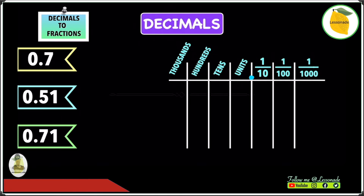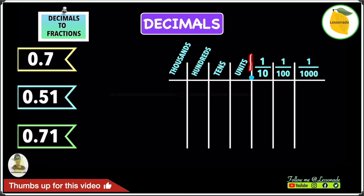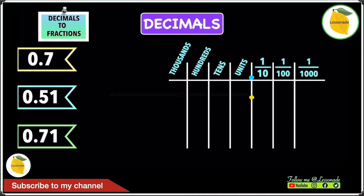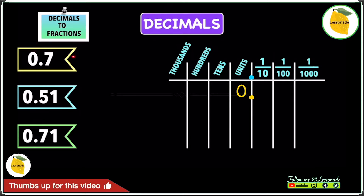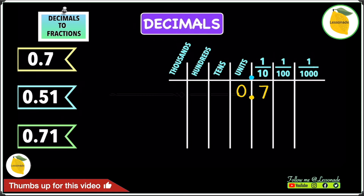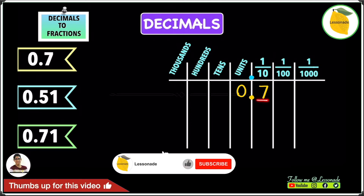Let's start by writing 0.7 in the place value table. Firstly, we have to match the decimal point correctly in line with the decimal point in the place value table, such as this one right here. So the decimal point goes right here, and then in front of the decimal point is a 0 — write the 0 down. And after the decimal point is a 7 — write the 7 as well. To convert this into a fraction, we look at the number after the decimal point to determine the numerator. The number after the decimal point is 7, so 7 will be our numerator.